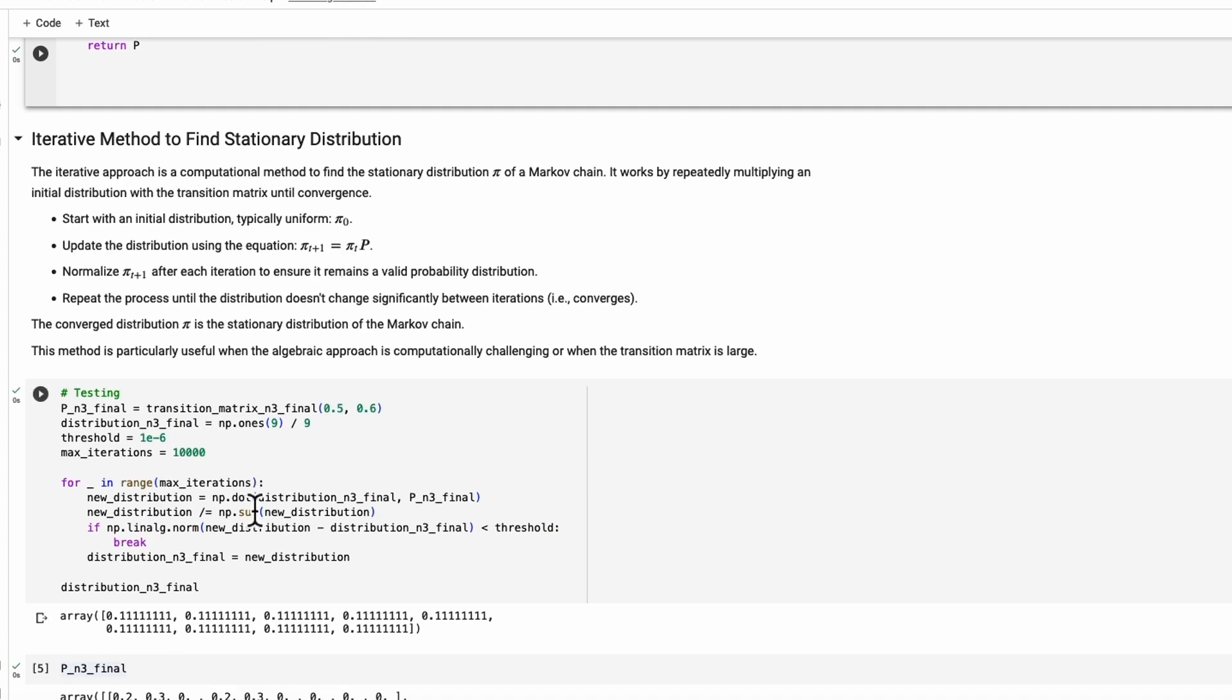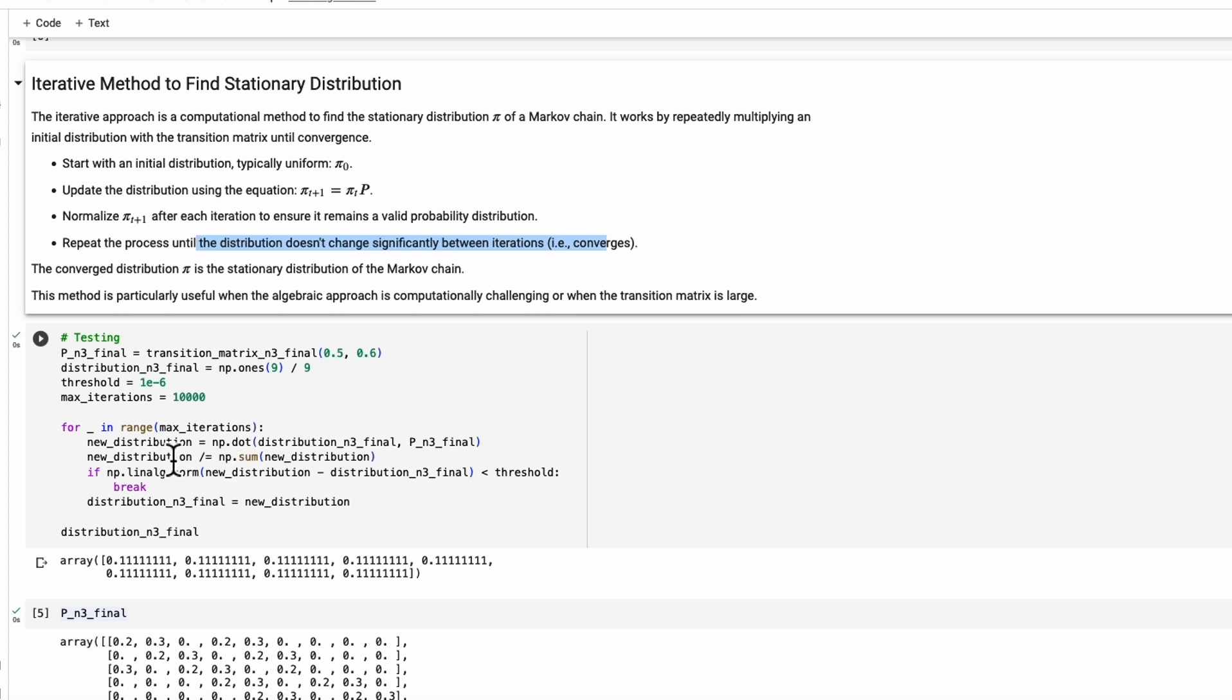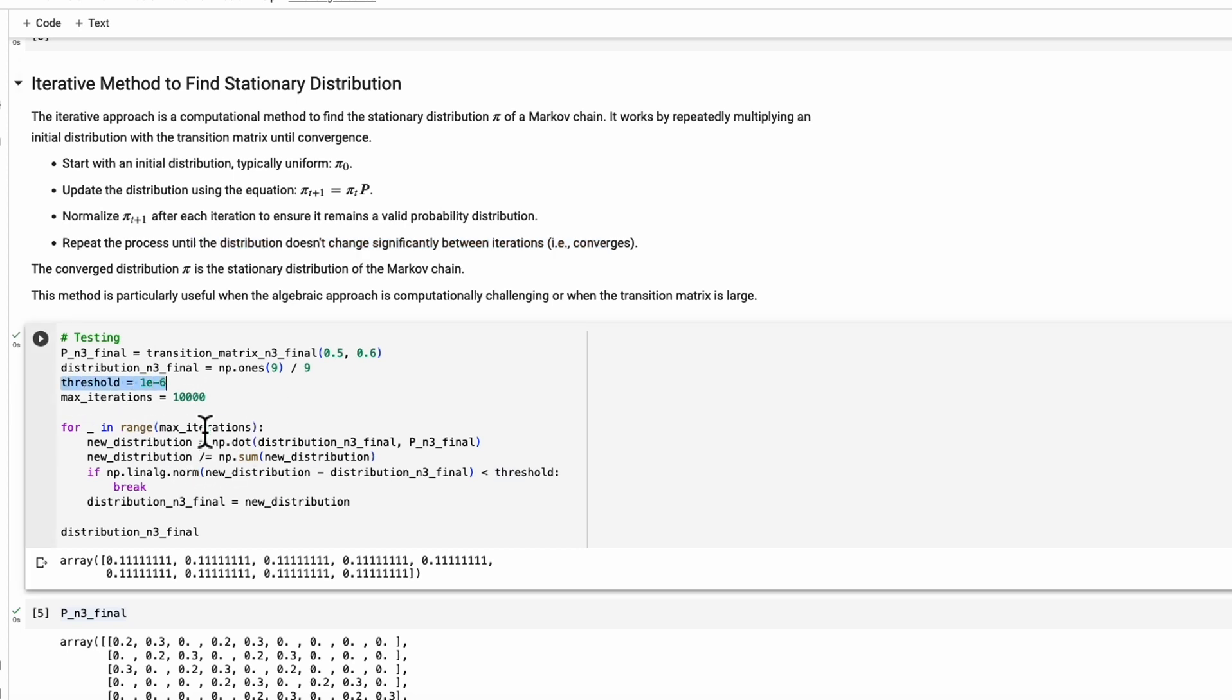Instead of solving the equation pi equal pi p, we're going to start with pi zero, and then each time we're going to see if the difference between the current value and the previous value are close enough with some threshold here. So this would compare the norm of the new distribution and old distribution.